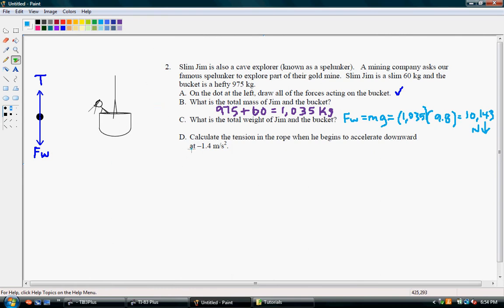Okay, so the last part says to calculate the tension in the rope when he begins to accelerate downward at negative 1.4 meters per second squared. Alright, well, we know that the sum of the forces equal mass times acceleration.